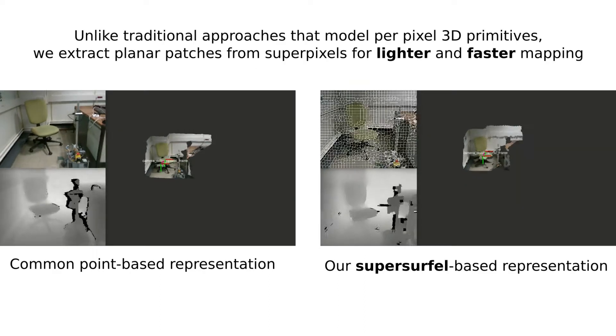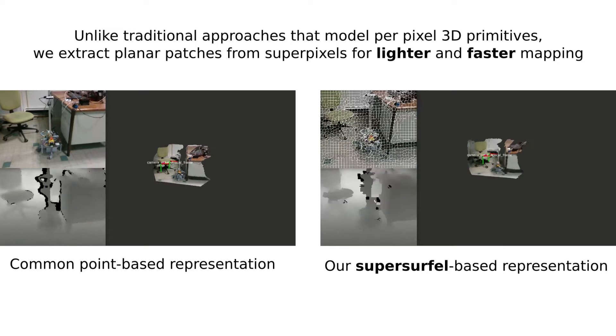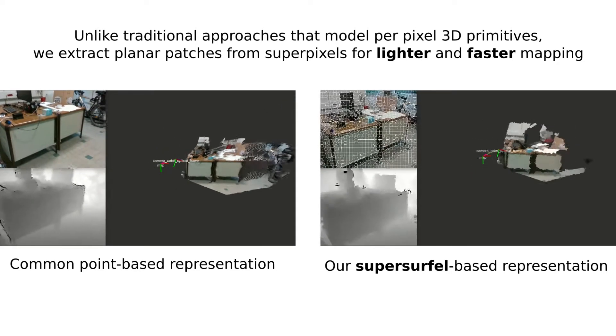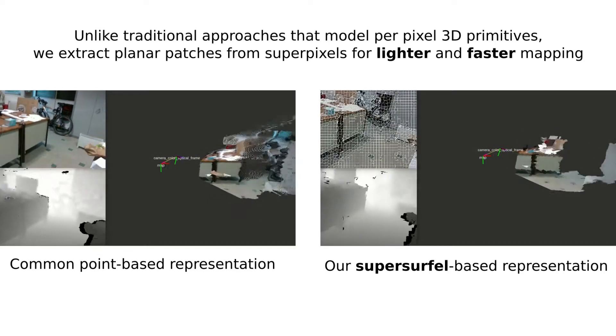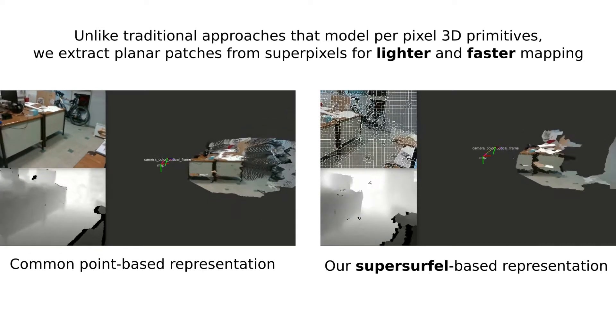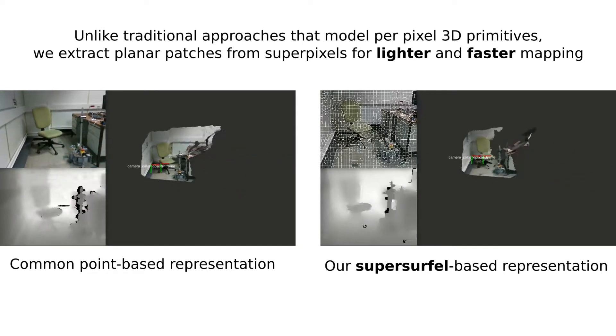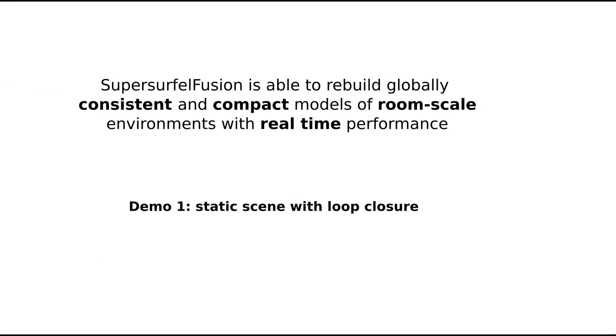To improve the speed and memory efficiencies of the 3D mapping, our system uses planar patches called SuperSurfles as modeling primitives. SuperSurfles are generated from the superpixel segmentation of an input RGBD frame. SuperSurffle Fusion is able to produce in real-time a lightweight and consistent 3D model of an observed room.